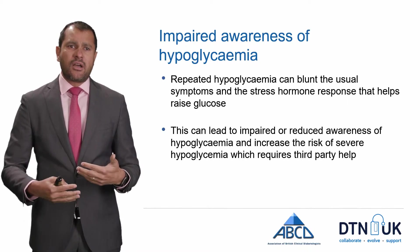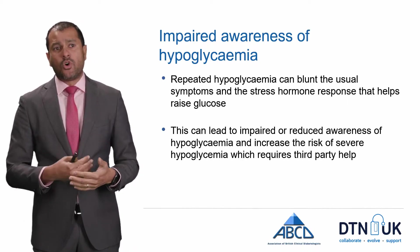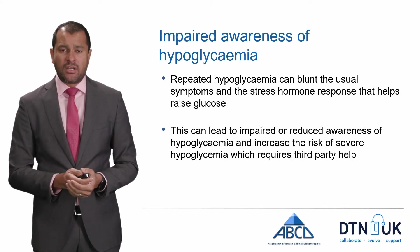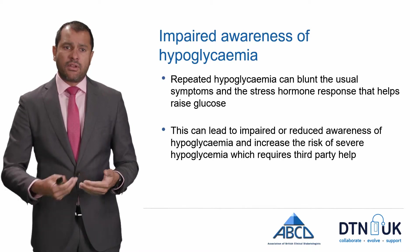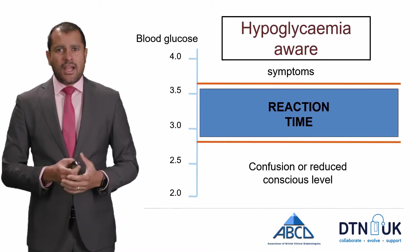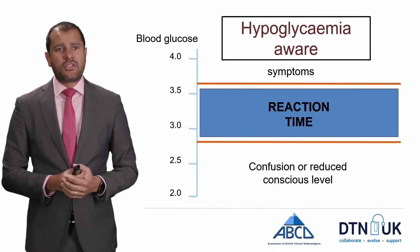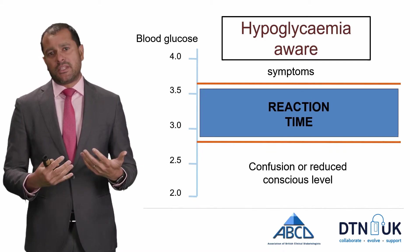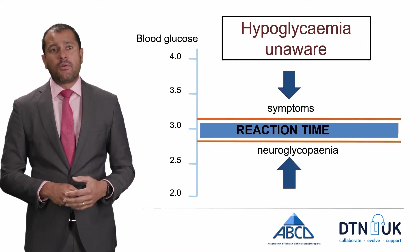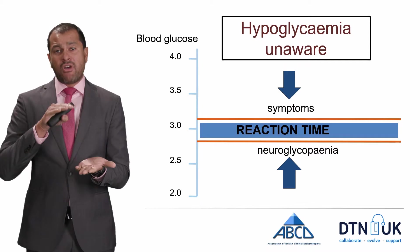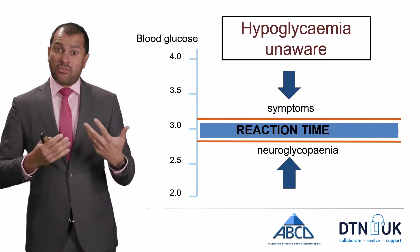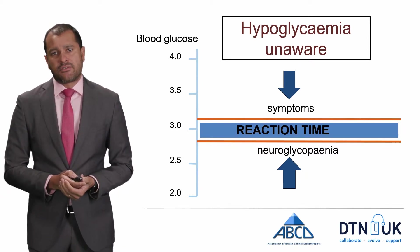Some people who have repeated hypoglycemia don't get the usual symptoms or hormone responses that raise glucose, leading to impaired or reduced awareness of hypoglycemia. If you can't recognize your hypos when you drop below three, that increases the risk of severe hypoglycemia needing third-party help. People with normal awareness usually get symptoms around 3.5 millimoles per litre, well before confusion sets in below 3. But people who are hypoglycemia-unaware have too small a gap between recognition and confusion, so they're often too confused to realize they're low.